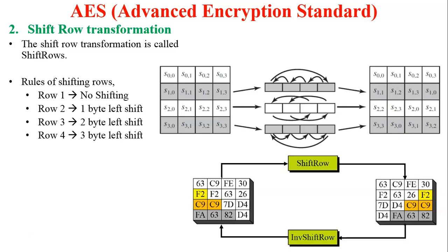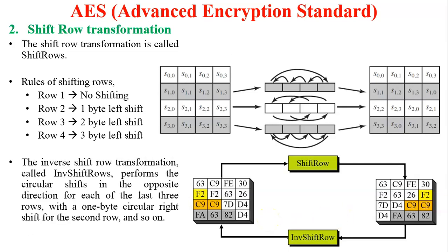In inverse transformation — the inverse Shift Row — it performs a right-hand side circular shift. The inverse Shift Row transformation performs the circular shift in the opposite direction, meaning it shifts to the right. For each of the last three rows: one-byte circular right shift for the second row, and so on.